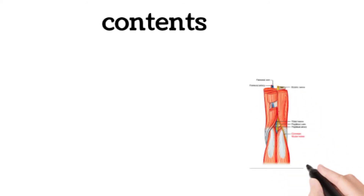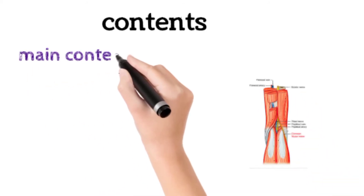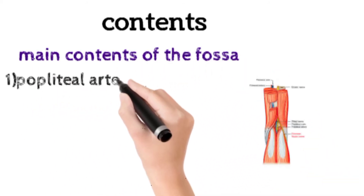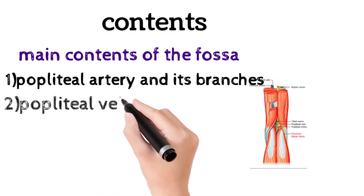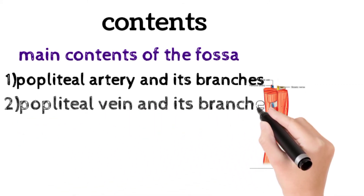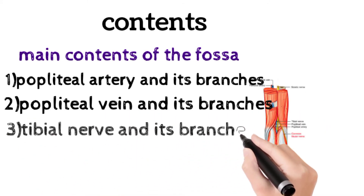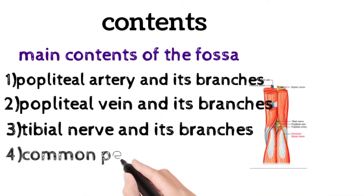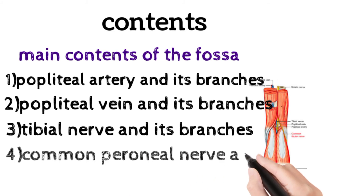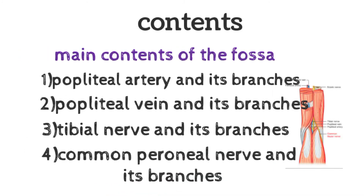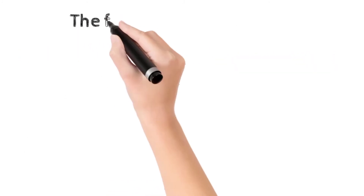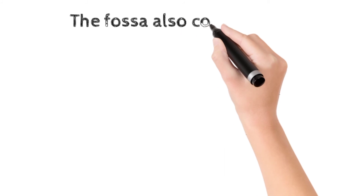The contents are mainly divided into the main contents and the rest of the contents. The main contents are the popliteal artery and its branches, the popliteal vein and its branches, the tibial nerve and its branches, and the common peroneal nerve and its branches.